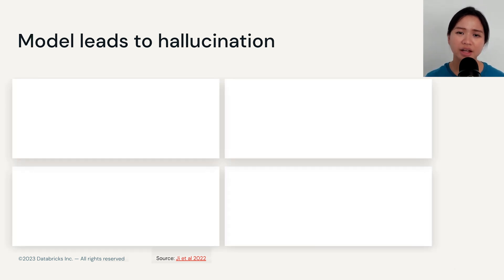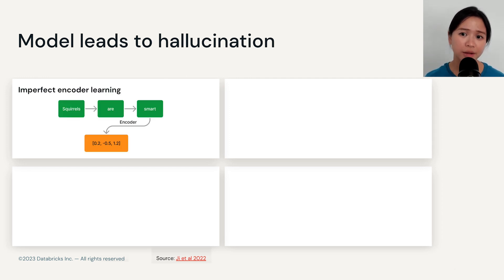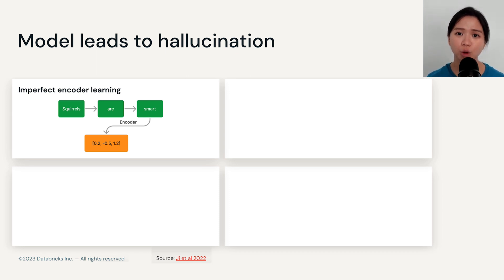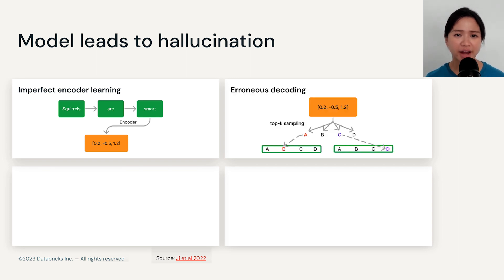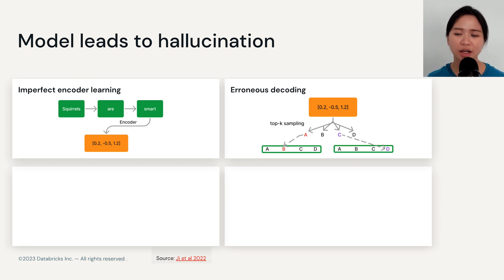The second prong that leads to hallucination is the model itself. The first reason is imperfect encoder learning, which means the encoder learns wrong correlations between parts of the training data. The second reason can happen at decoding time, where the decoder actually attends to the wrong part of the input source when trying to generate text output.